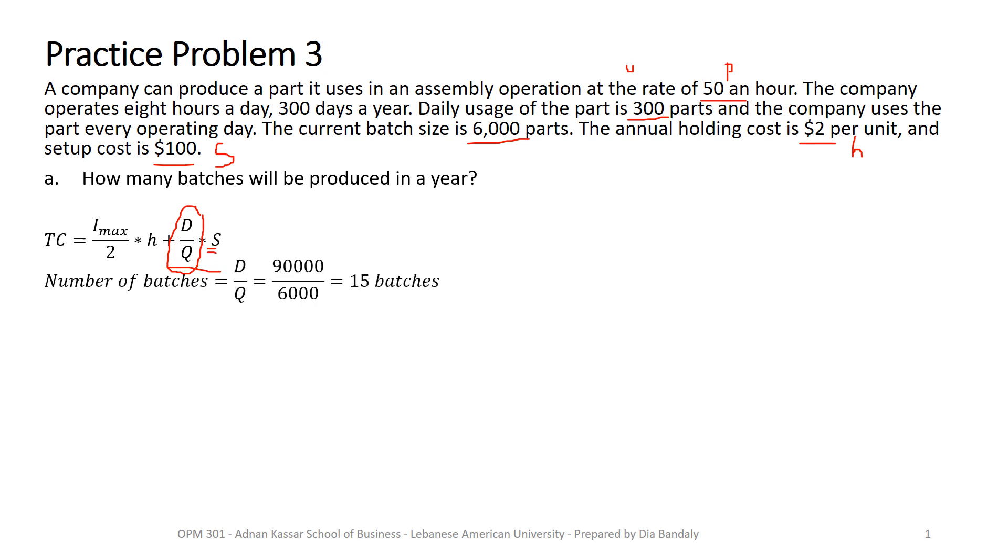So that's it. This is how you answer this question. It's D over Q. But what's D? We're not given a capital D, but we can get it, because D comes from the internal consumption. And we know that small u is 300. And it's 300 every day. We multiply it by 300 days a year, and we get 90,000.